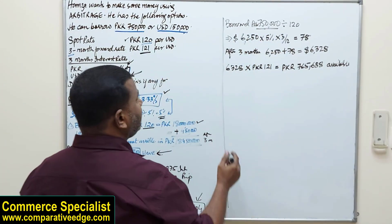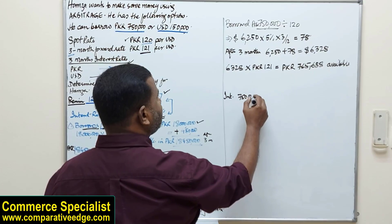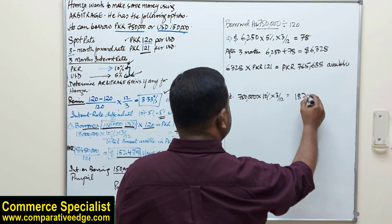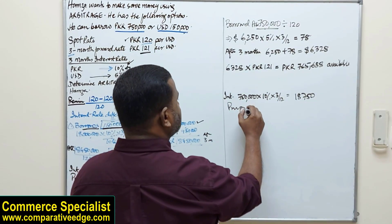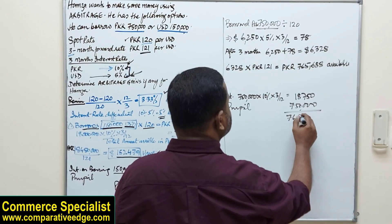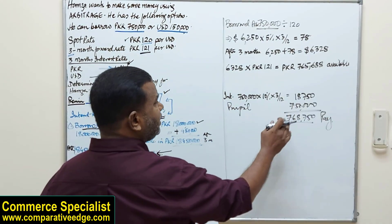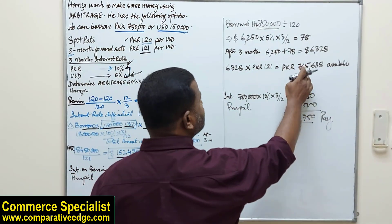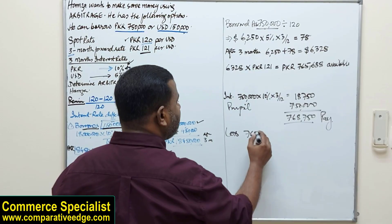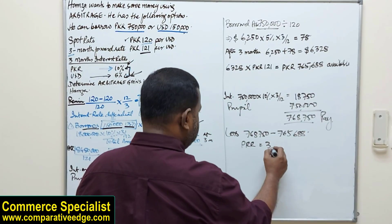But since he borrowed PKR 750,000 at 10% for 3 months, the interest is PKR 18,750, making the total repayment PKR 768,750. He would only have PKR 765,688 available, resulting in a loss of PKR 3,062. This confirms he made the right decision by borrowing in USD.